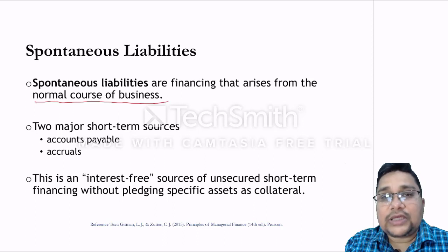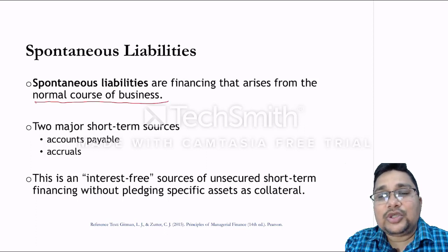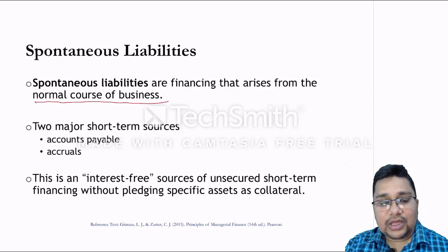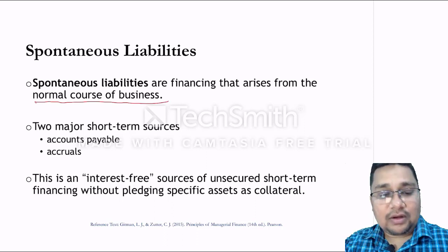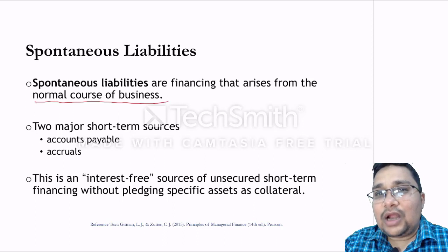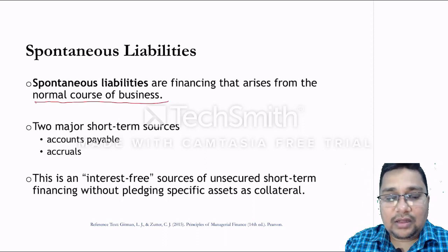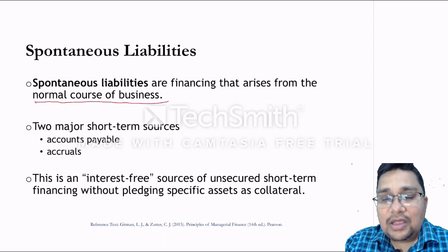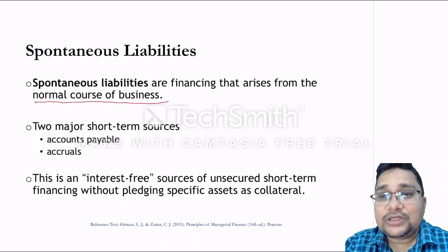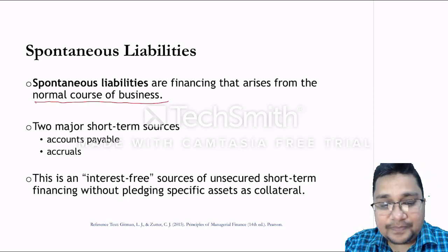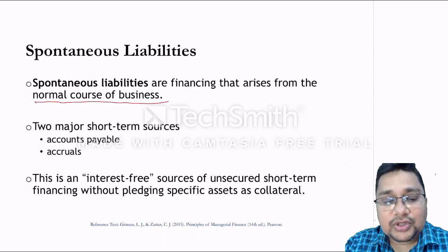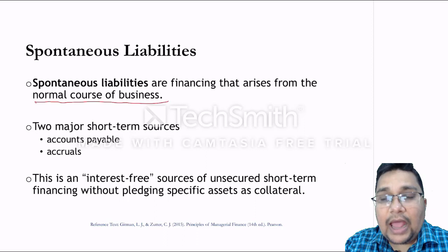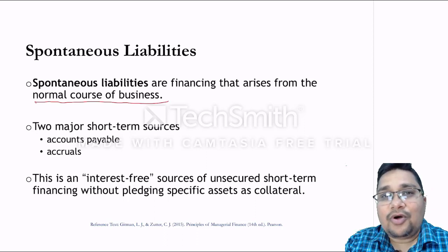The two main sources of spontaneous liabilities are accounts payable and accruals. These liabilities are another source of short-term financing — whenever we need, we can finance from accounts payable and accruals. Accounts payable are amounts due to another party like a supplier, so until you repay your supplier you can use the supplier's fund for your business. Similarly, you can use the fund from accruals until it is paid. This is why these are the two major sources of interest-free short-term financing.